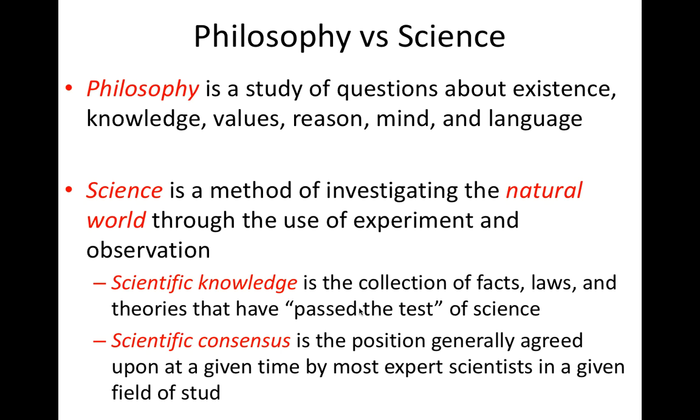The words science and scientific are used in many contexts and with many subtle but different meanings. Most specifically, science is a method. It is a method that tests ideas through observation and experiment. The collection of facts, laws, and theories that have passed the test of science can be referred to as scientific knowledge.